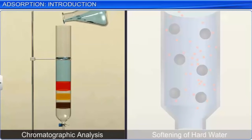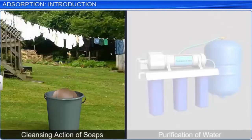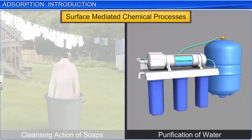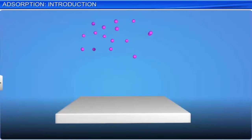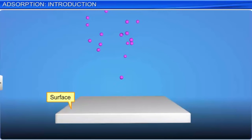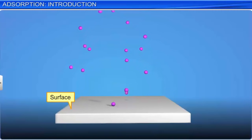Chromatographic analysis, softening of hard water, the cleansing action of soaps and purification of water are all surface-mediated chemical processes. In these examples, the reactions occur at the surface. The branch of chemistry that deals with the study of phenomena that occur on the surface or interface, at the boundary separating two bulk phases, is known as surface chemistry.